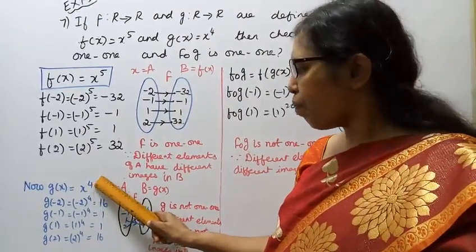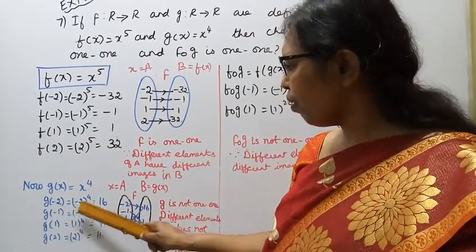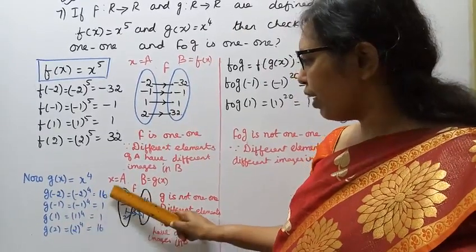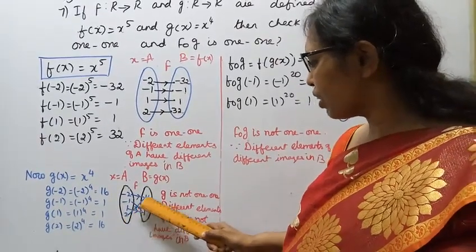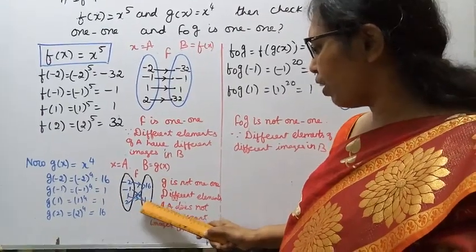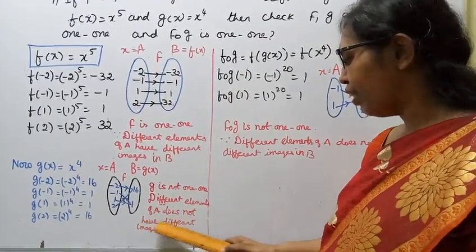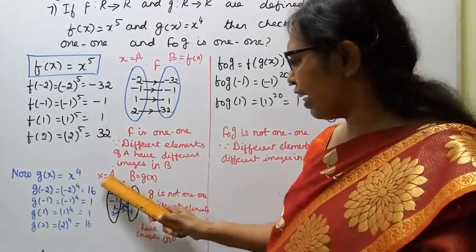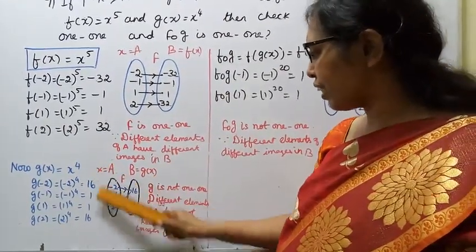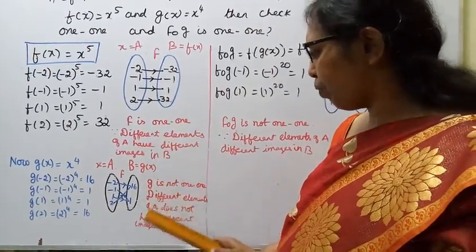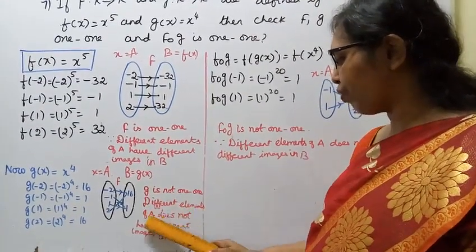Now for g(x) = x^4. The power is even. Taking x values minus 2, minus 1, 1, 2: (minus 2)^4 = 16, (minus 1)^4 = 1, 1^4 = 1, 2^4 = 16. So minus 2 gives 16, 2 gives 16; minus 1 gives 1, 1 gives 1. Therefore g is NOT 1-to-1 — different elements of A do not have different images in B.